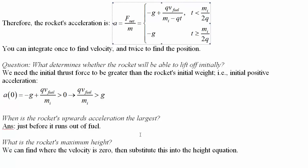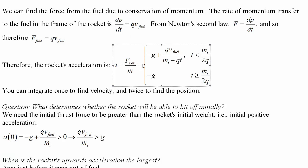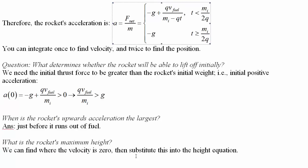What is the rocket's maximum height? We would integrate to find it. It's not just before it runs out of fuel, because the rocket still has positive velocity at that point. It takes some additional time before the velocity returns to zero — that's where maximum height is reached. So we find where velocity equals zero and substitute that into the height equation.